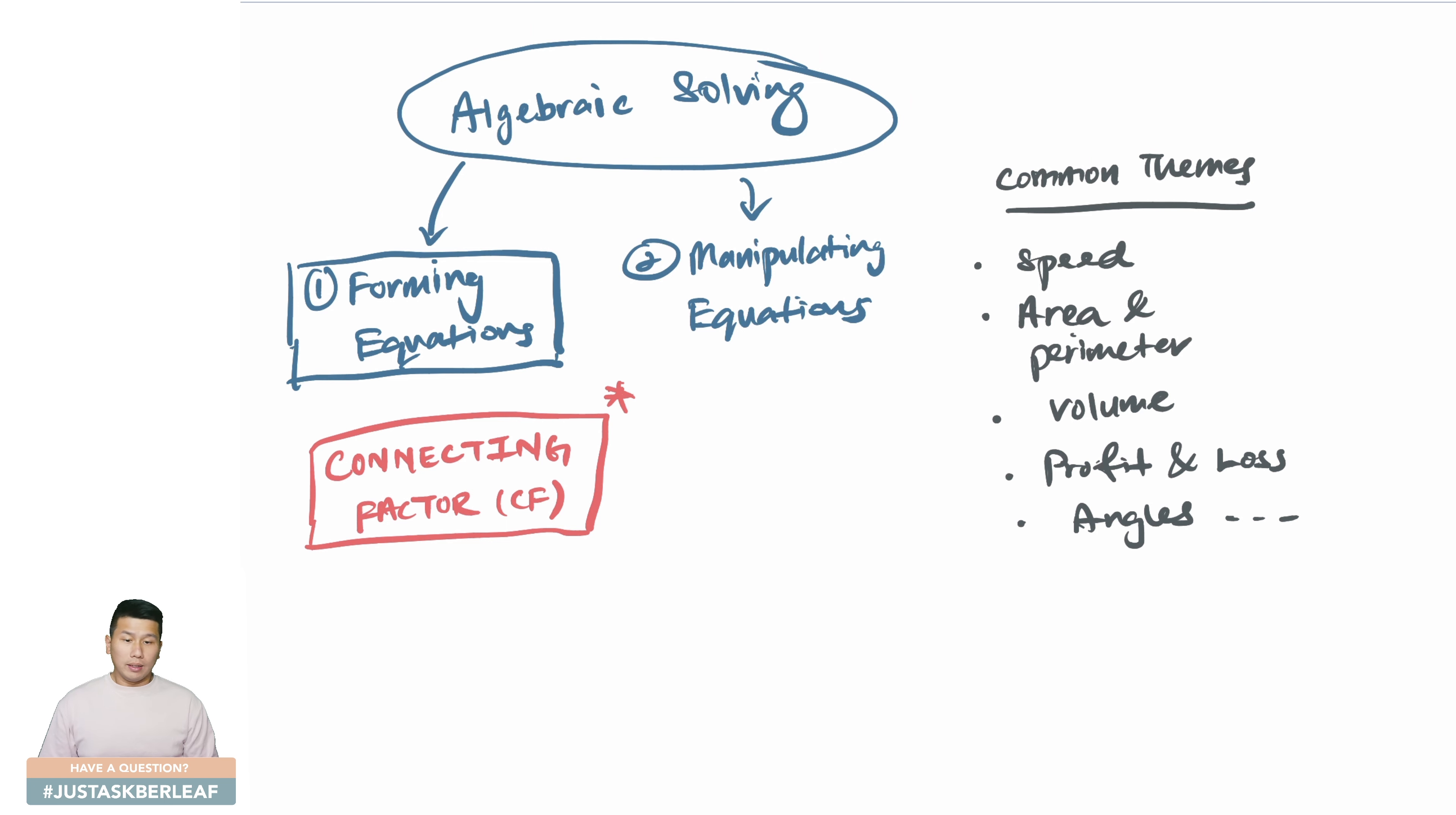Let me elaborate on this. An equation is made up of the left-hand side being equivalent to the right-hand side. Whatever that you intend either side to represent is actually known as the connecting factor. So be it the left-hand side or the right-hand side, we call it the CF. For instance, it can be the speed of the train, the volume of the tank when it's full, so on and so forth. It's practically the thing that connects the left to the right.